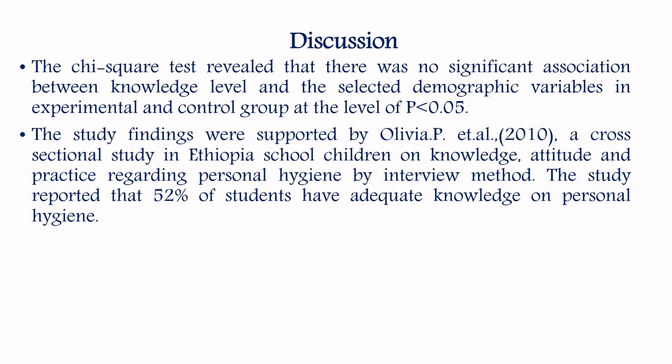The discussion shows that the chi-square test revealed there was no significant association between knowledge and selected demographic variables in the experimental and control group at p less than 0.05. The study findings were supported by a study conducted by Olivia P. et al. in the year 2010, a cross-sectional study in Ethiopia on knowledge, attitude and practice regarding personal hygiene among school children conducted by interview method, which reported that 52% of students had adequate knowledge on personal hygiene.